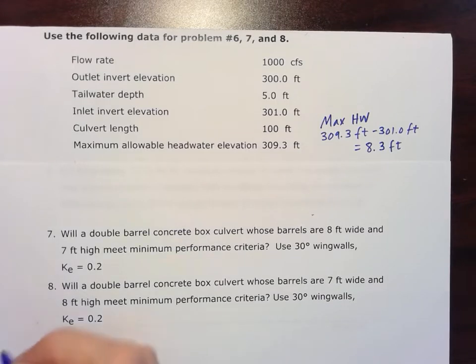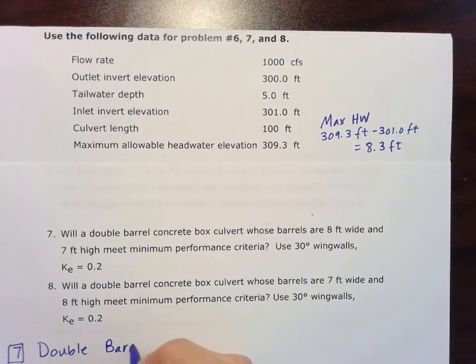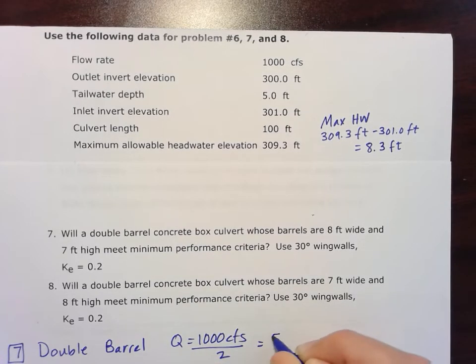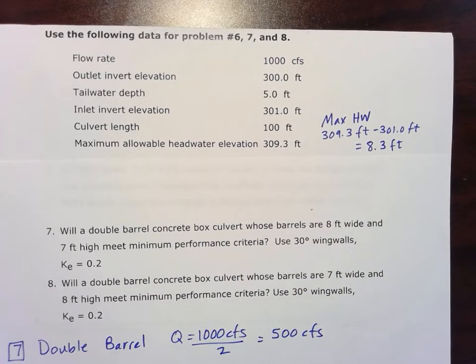So for number 7, we've got the double barrel. And our Q given to us is 1000 CFS, so we'll divide that by 2, so our new Q will be 500 cubic feet per second for the double barrel.